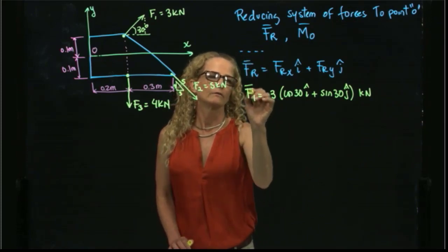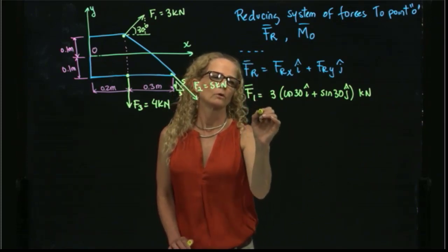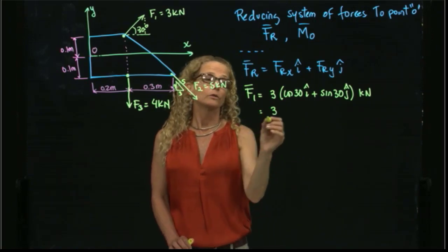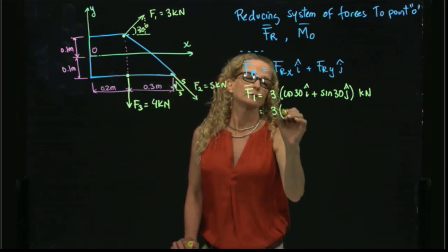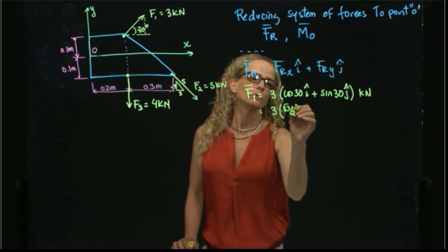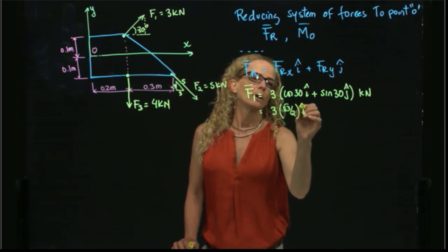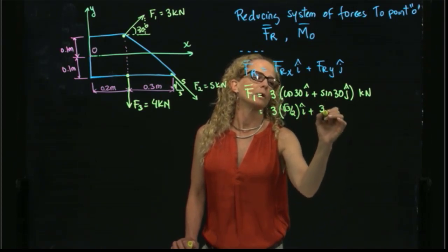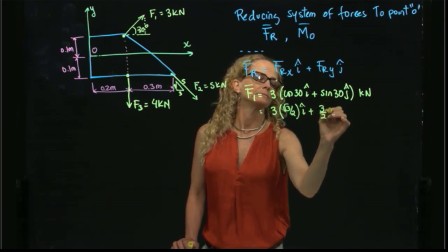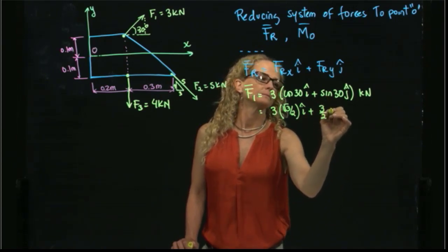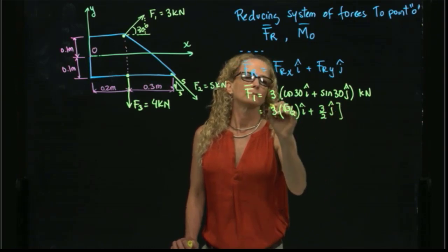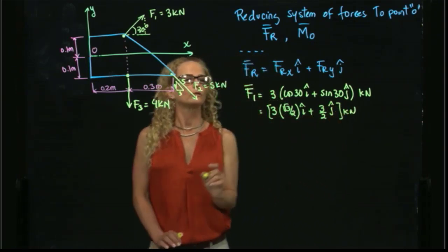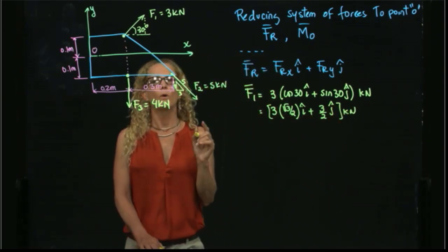So F1 equals 3 times cosine of 30°, which is the square root of 3 over 2, in I, plus 3 times sine of 30°, which is one half, in J — all in kilonewtons. So we were able to express F1.